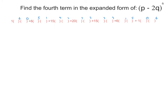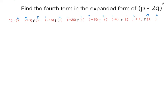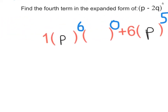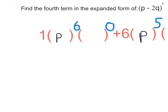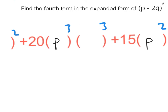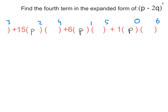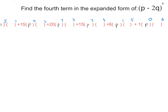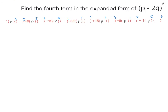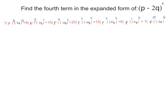Now I need to plug in P into the first parenthesis and negative 2Q into the second parenthesis. As you can see, I've put the P's on all the first parentheses, and then I put negative 2Q on all the second parentheses.